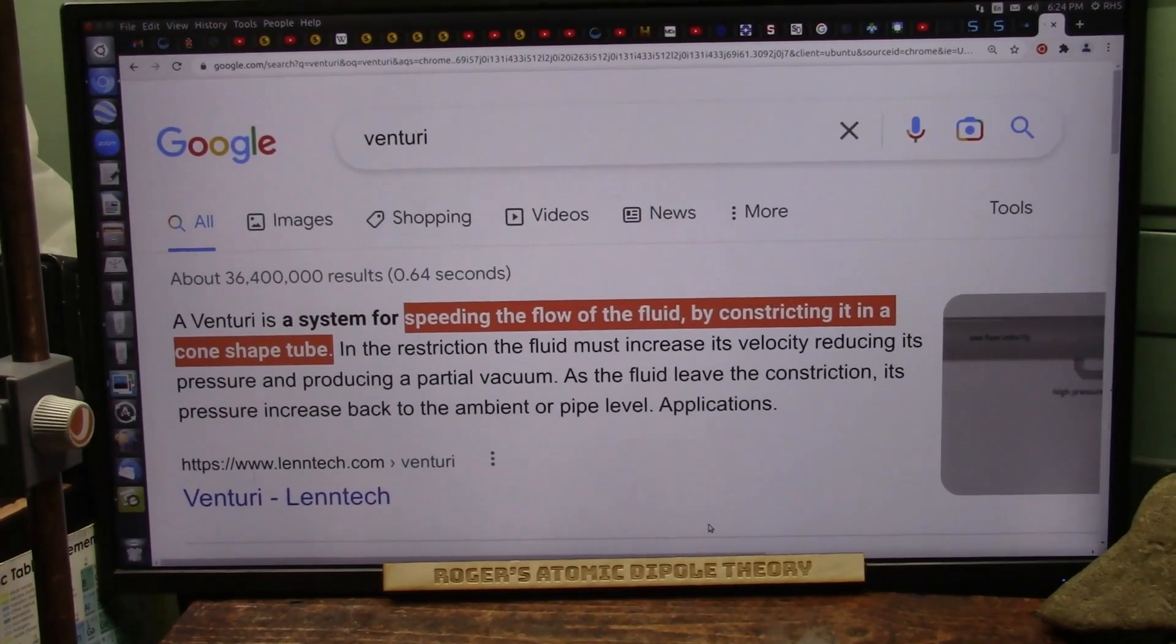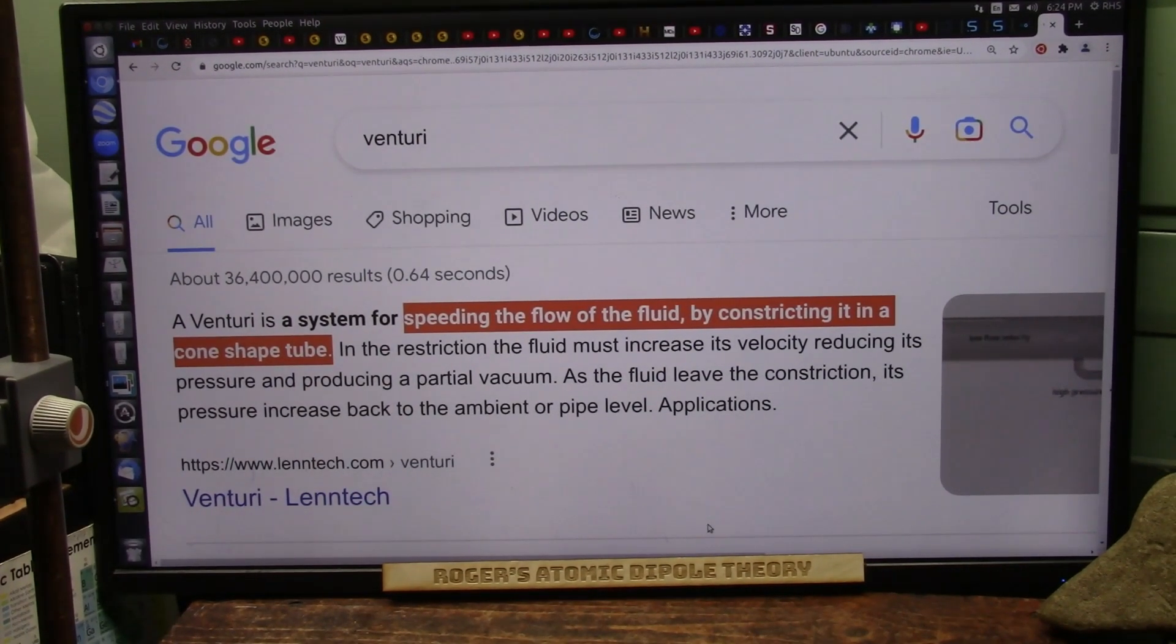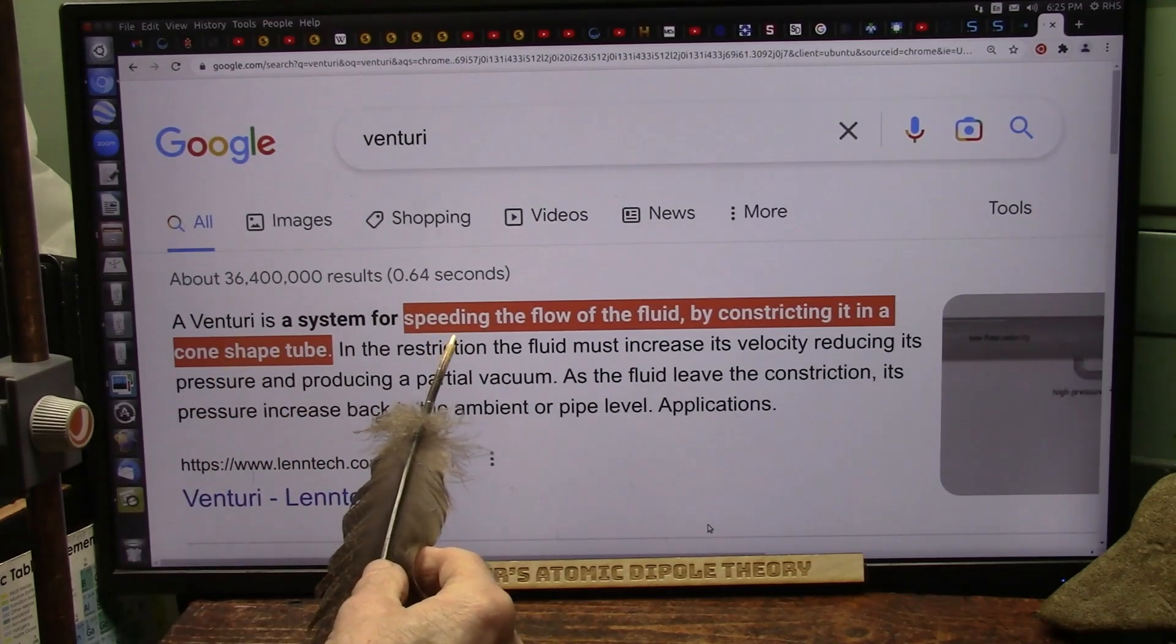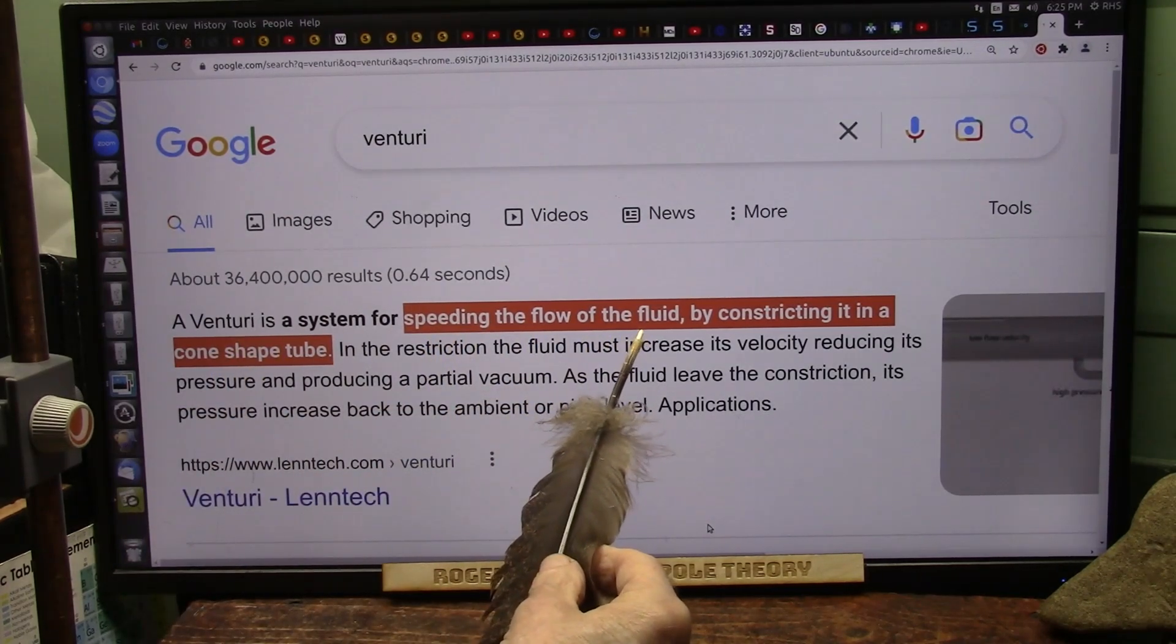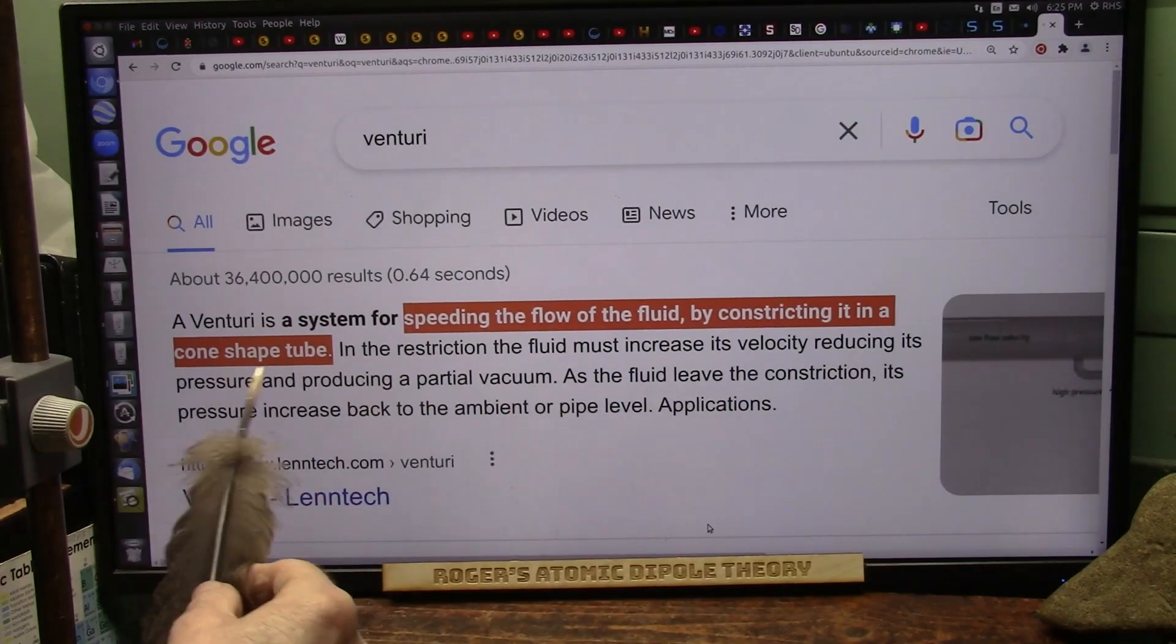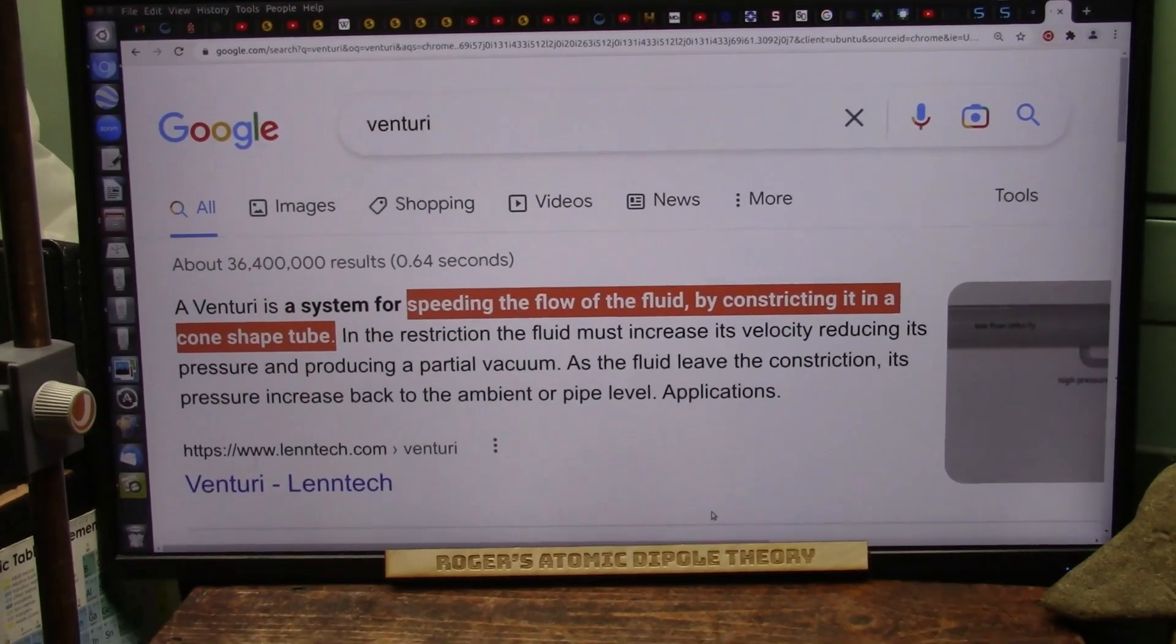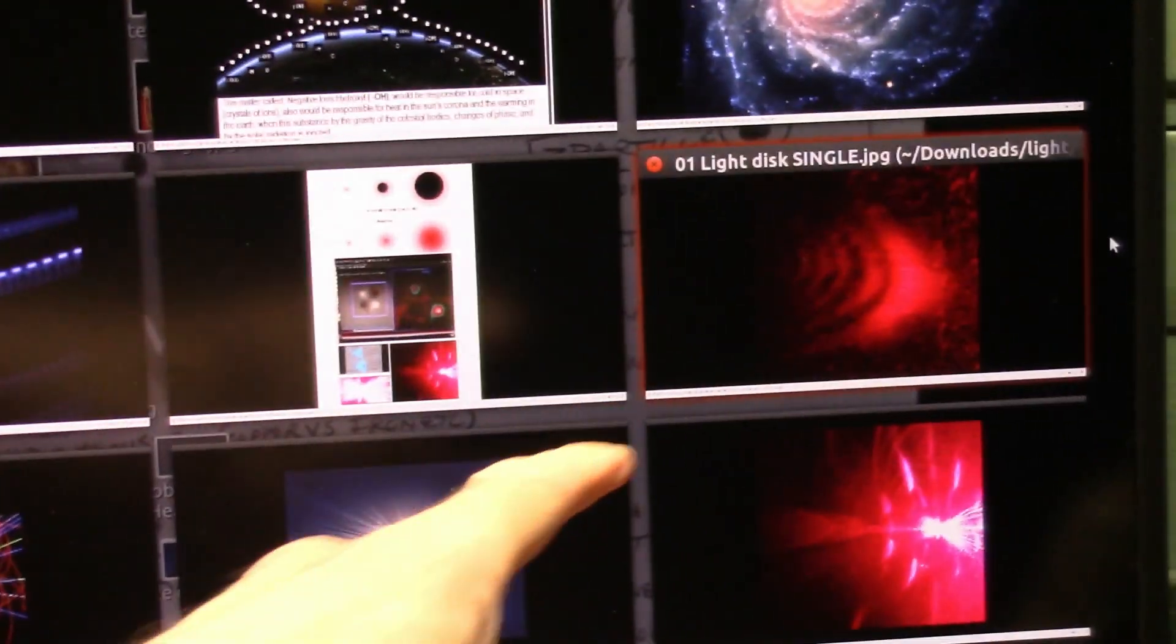Okay my friends, another shocker du jour today. This is about light, and light is a fluid. We use the Venturi to speed up the flow of that fluid by constricting it in a cone-shaped tube. That accelerates light.